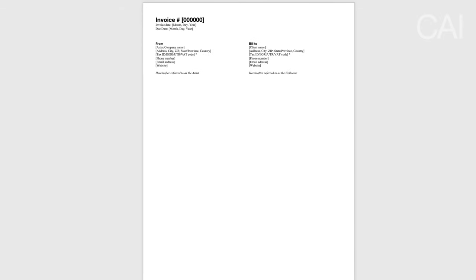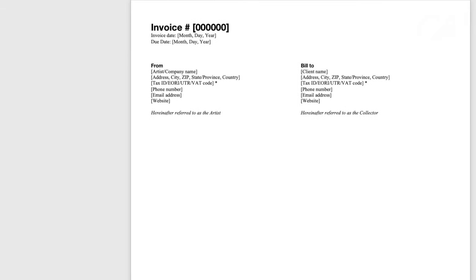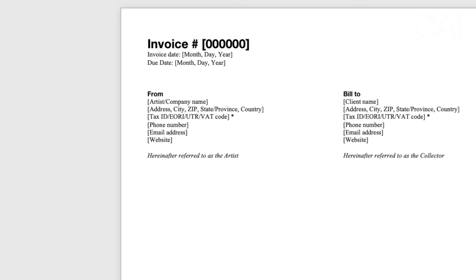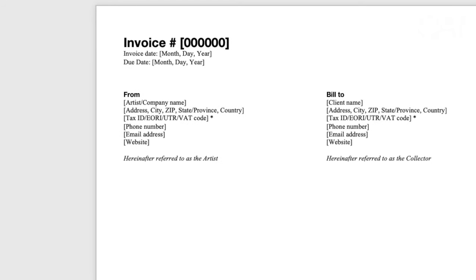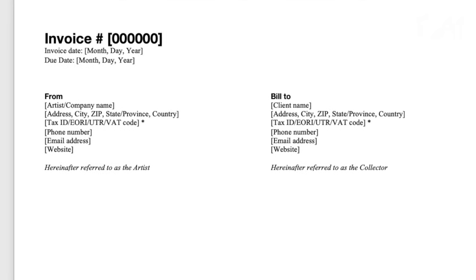Step two: invoice information. Next, we write down our own invoice information and that of the client. Referring to yourself as the seller, make sure to include all your details: your name, address, tax ID if applicable in your country, phone number, email address, and your website. You can also add and thereafter refer to yourself as 'the artist,' which makes it a lot more efficient for your future terms of sale to refer back to these contact details.